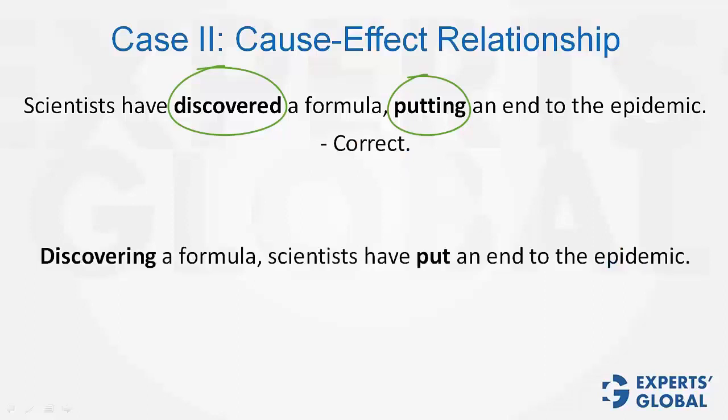Remember, it can be the other way round as well. The cause may have the ing form, and then the effect must have the ed form. So, discovering a formula, scientists have put an end to the epidemic. This sentence is also perfectly alright.